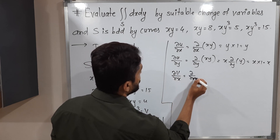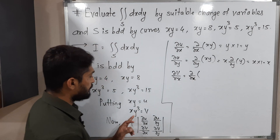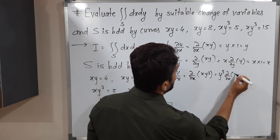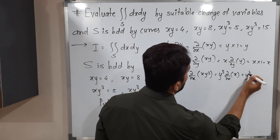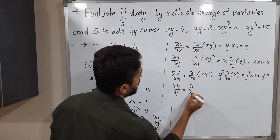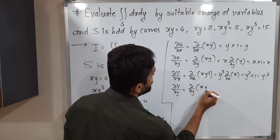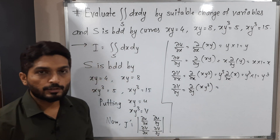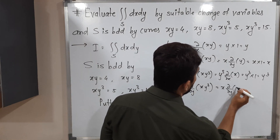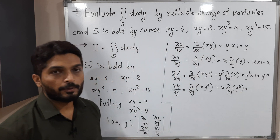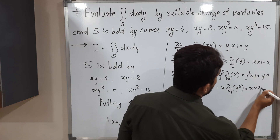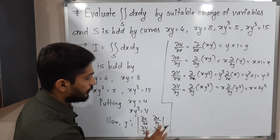Now for v = xy³: the derivative of v with respect to x — y³ is constant, it comes outside, derivative of x is 1, so ∂v/∂x = y³. The derivative of v with respect to y — x is constant, it comes outside, and the derivative of y³ is 3y², so ∂v/∂y = 3xy².